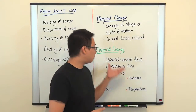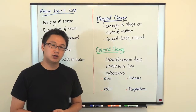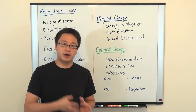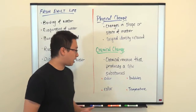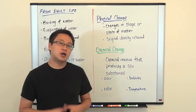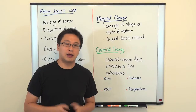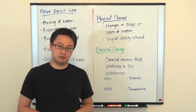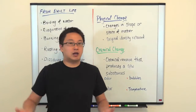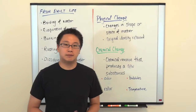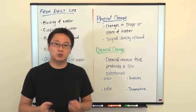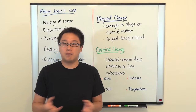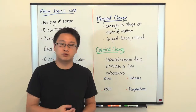Now let's look at chemical change. Chemical change involves a chemical reaction that takes place and produces at least one new substance during the reaction. How can we tell if a chemical reaction is taking place? Because with our naked eyes we cannot see molecules or compounds reacting.